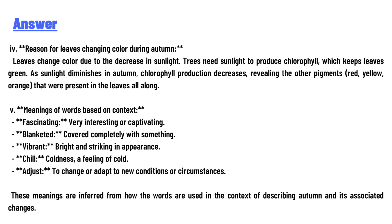Fourth, the reason for leaves changing color during autumn: leaves change color due to the decrease in sunlight. Trees need sunlight to produce chlorophyll, which keeps leaves green. As sunlight diminishes in autumn, chlorophyll production decreases, revealing the other pigments that were present in the leaves all along.